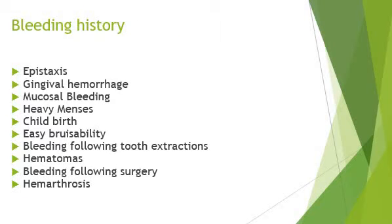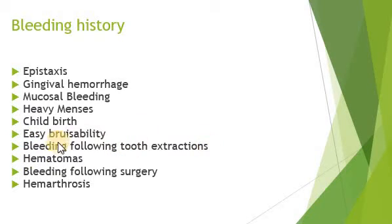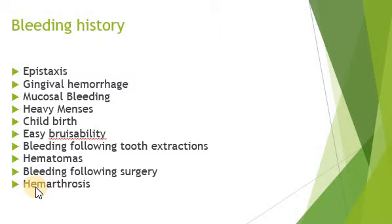The general picture of bleeding disorder includes epistaxis, which is bleeding from the nose, gingival hemorrhage, mucosal bleeding, and in females, very heavy menstruation and high bleeding after childbirth. There is easy bruisability, bleeding following tooth extractions, and there may be formation of hematomas — a collection of blood outside the blood vessels, caused by injury to the wall of a blood vessel causing blood to seep into surrounding tissues. There may also be hemarthrosis, bleeding into a joint, which is the most common cause of joint swelling and pain, especially if monoarticular.